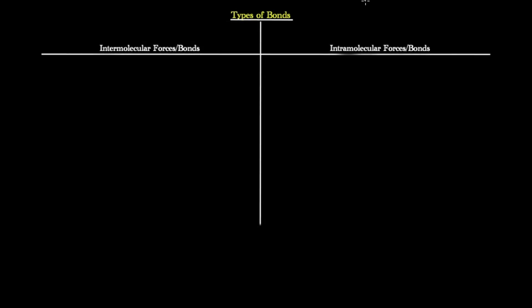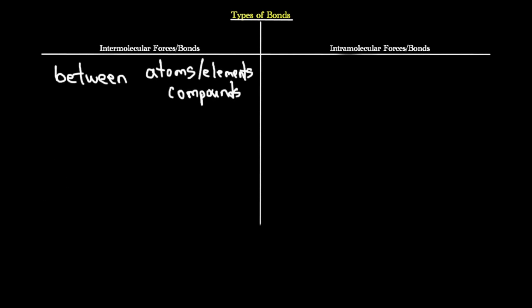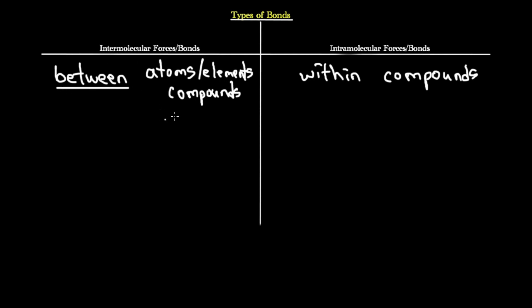Before we dive deep into the discussion of intramolecular forces, let's first take a look at the types of bonds that generally exist. They would be placed into two separate categories: intramolecular bonds and intermolecular bonds. Intermolecular bonds are bonds that occur between atoms, elements, or compounds. The key word here is 'between,' not 'within,' because 'within' qualifies for intramolecular. Think of 'intra' as within the compounds, whereas 'inter' means between.